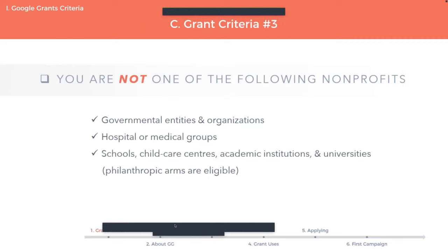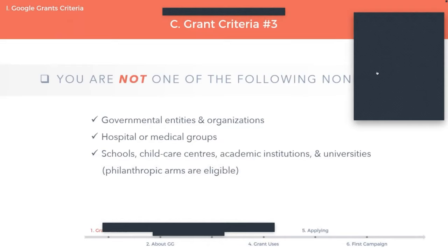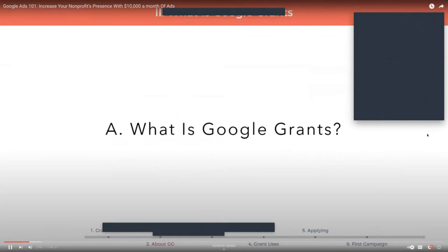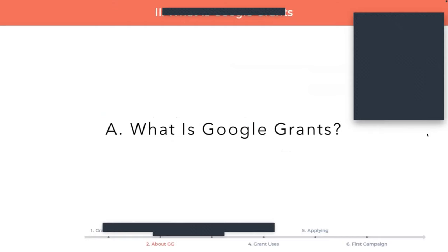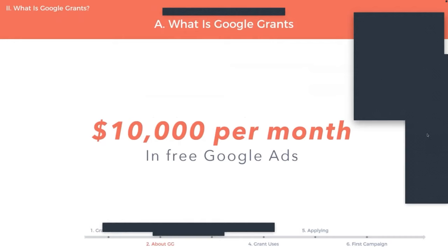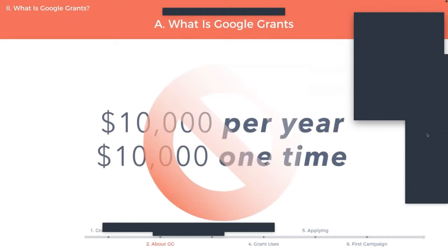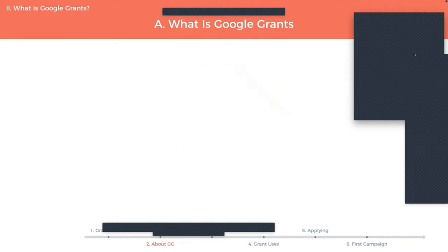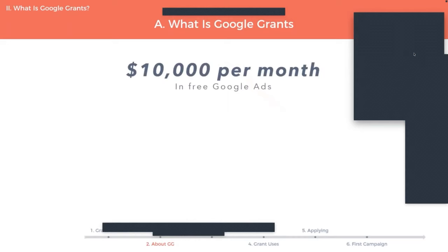As long as you hit those three main criteria, you can be pretty confident that you will get the grant. That's just the preliminary piece about eligibility. We're going to explain what the grant is. Thank you, Simon. So what is the Google Grant? The Google Grant is a program that gives eligible nonprofits $10,000 per month in free Google Ads.